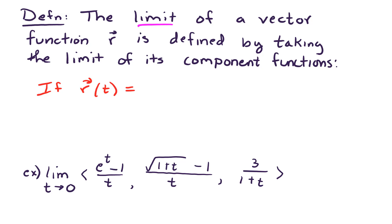So if r of t is a vector function with components f of t, g of t, and h of t, then the limit as t approaches a of r of t...